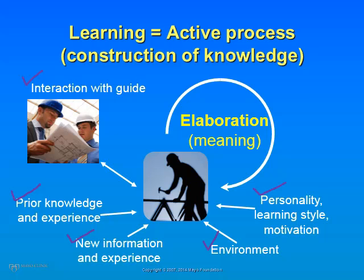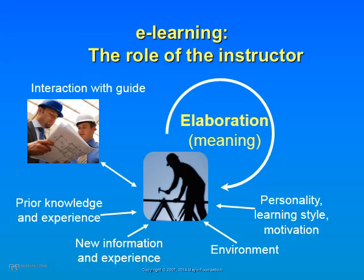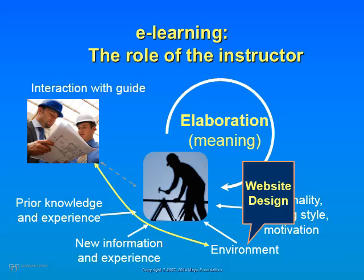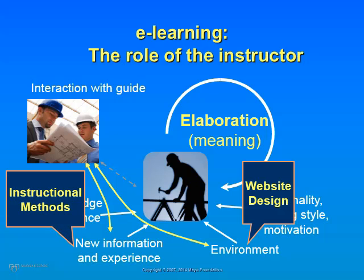The learner's intrinsic traits — such as personality, learning styles, and motivation — also matter. In a face-to-face course, the student and teacher interact directly. In an online course, the interaction is different and indirect. The instructor interacts with the learner primarily by controlling the environment or website design and by controlling the instructional methods. The instructor has little control over motivation, personality, or learning styles. So as a teacher, you need to focus your attention on the elements you can control and those that have the greatest influence.